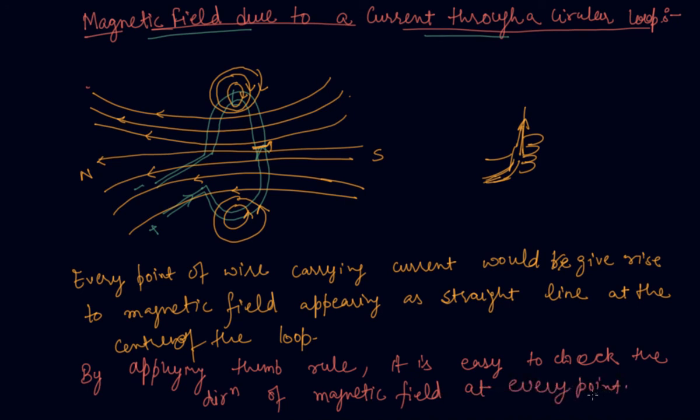Now I hope that you are pretty clear about when a current flows through a circular loop, what is the direction of the magnetic field.